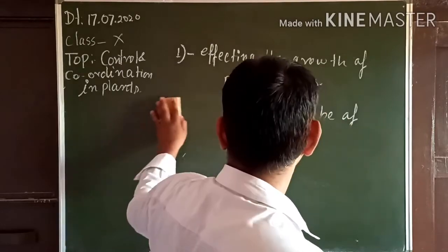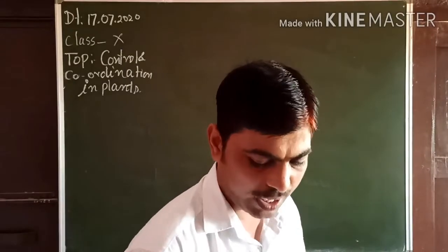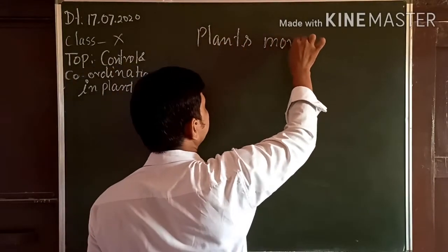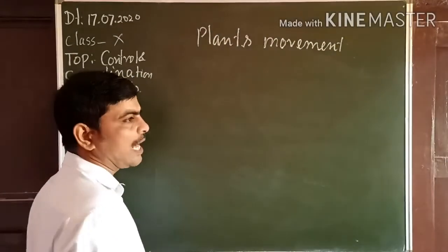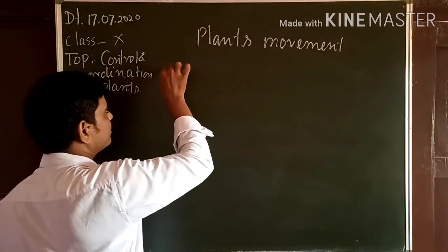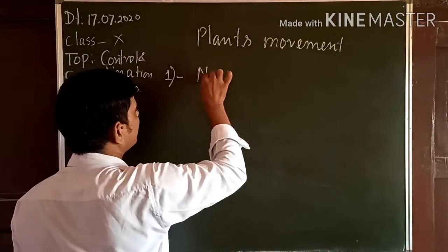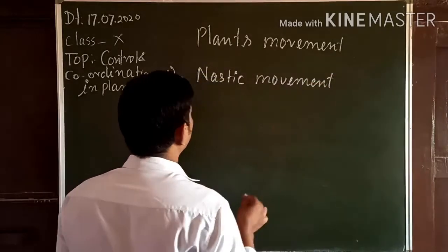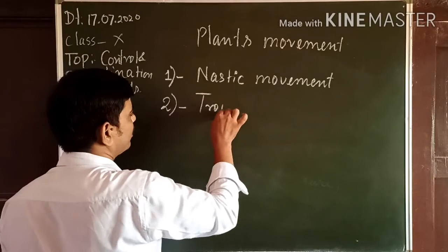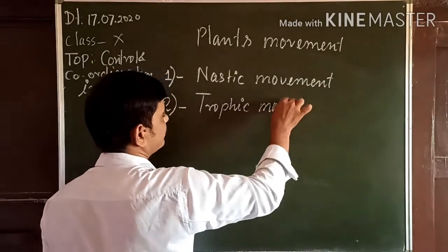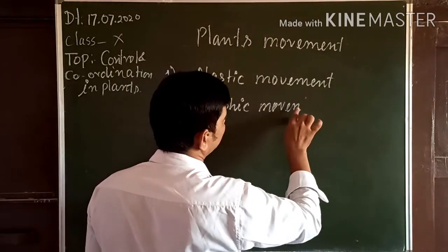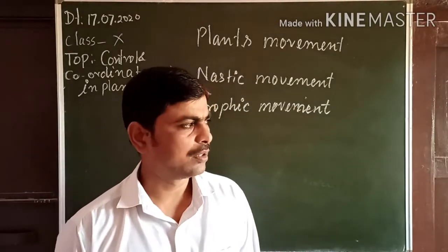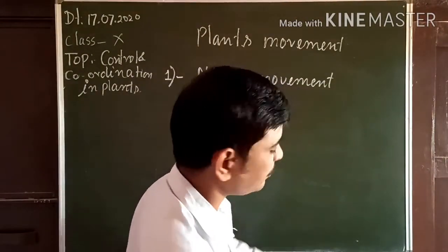Now let's look at what kinds of movement are shown by plants. There are two types of movement shown by plants in response to stimuli. One is called Nastic movement, and the second is called Tropic movement. These two kinds of movements are shown by plants in response to stimuli.